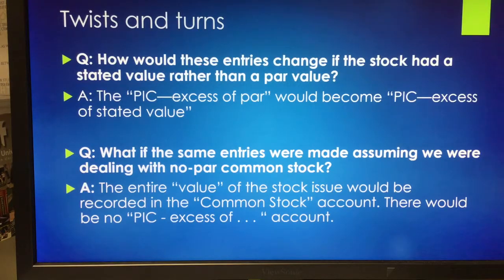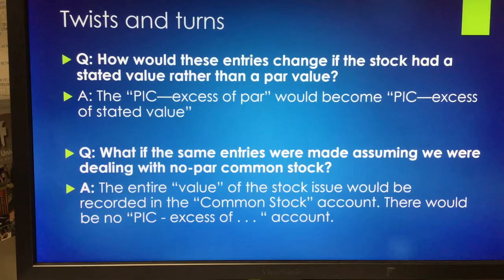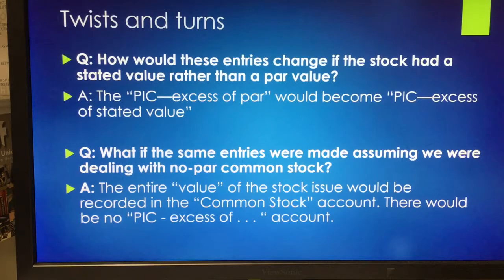What if the same entries were made assuming we were dealing with no-par common stock? It actually makes the transaction a bit easier, because you simply credit common stock for the recorded value of the stock — there's no paid-in capital in excess of account. So in that first entry where we issued shares for $900,000, we would simply credit common stock for $900,000.